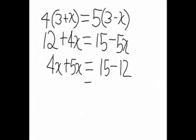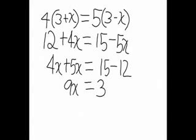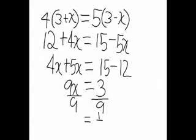Now it's just simple addition and subtraction. So we do 4x plus 5x equals 9x, and 15 minus 12 equals 3. Now we divide 9x by 9 and 3 by 9 to isolate the variable. So now we know that x equals 1 third.